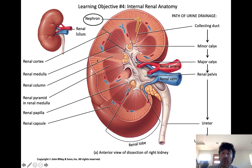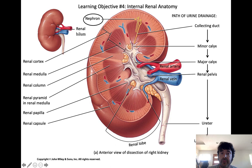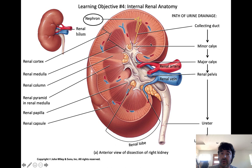Within the renal cortex you have different structures, but I won't ask the structures as a region. The deep region of the kidney, which stains a little more darkly, is referred to as the renal medulla. Within these different regions you find different structures. These macroscopic dark-staining structures that look like a guitar pick in cross-section but are actually pyramid-shaped in three dimensions are called renal pyramids, and you find them within the renal medulla.